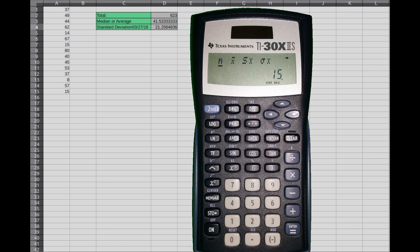N is the amount of numbers you have entered. X is the average. This is the standard deviation value. This is sigma X value. Total sum of values. Total sum of values squared.